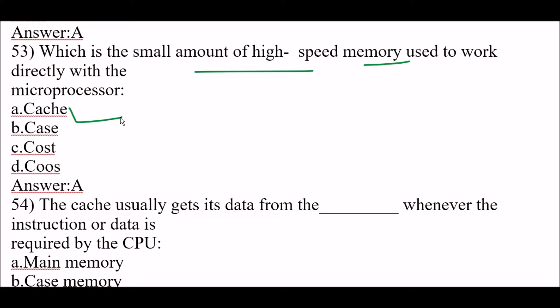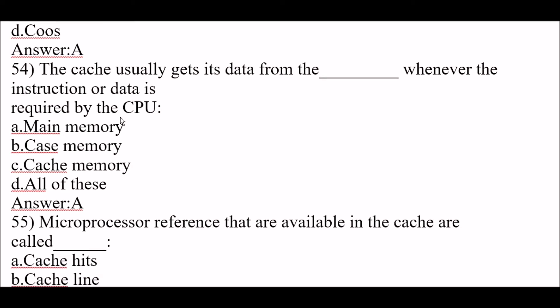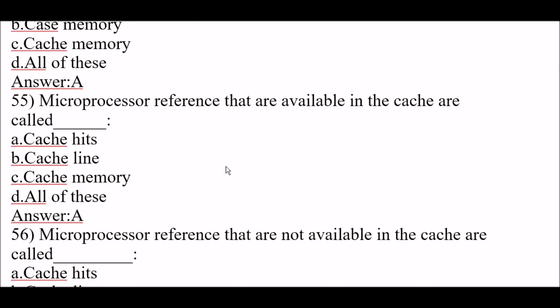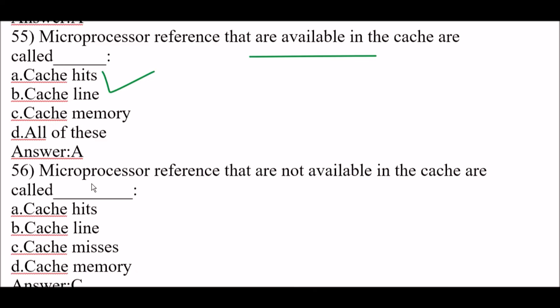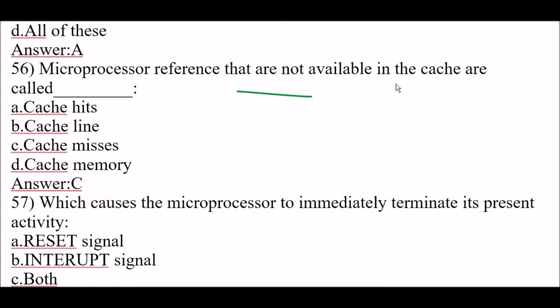Next question: the cache usually gets its data from main memory whenever an instruction or data is required by the CPU. Next question: microprocessor references that are available in the cache are called cache hits. Next question: microprocessor references that are not available in the cache are called cache misses. These two are very important questions.